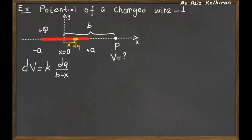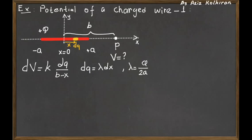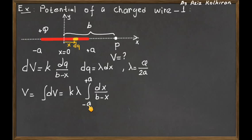Next, we express dq in terms of the charge density and dx. Since it is a line charge, multiplying the infinitesimal length dx by the linear charge density gives dq. We express the linear charge density as q divided by 2a (total charge over total length), and finally set up the total potential by integrating the dV expression from x = -a to x = +a, since the charge extends over that range.